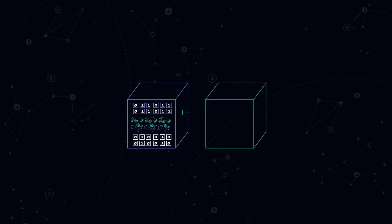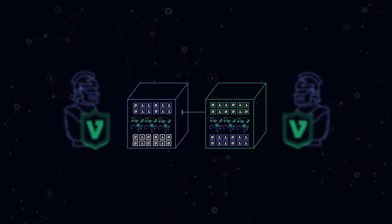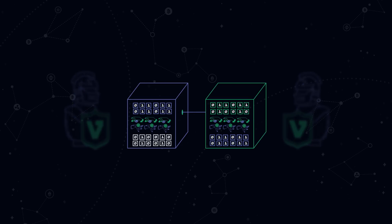These layer one blockchains produce blocks — a batch of state transitions that progress to a new state — but they do not have their own validators to verify those blocks for correctness.